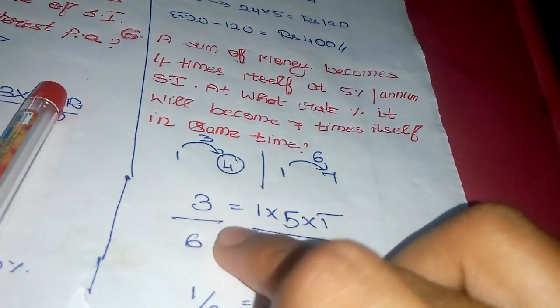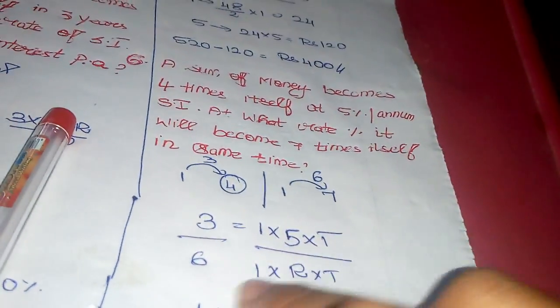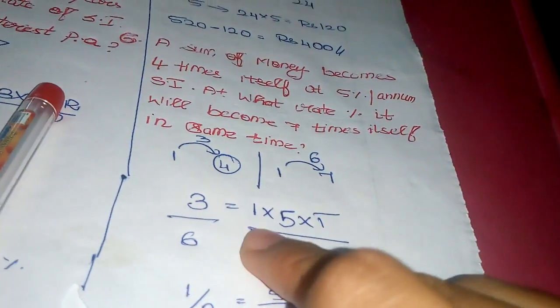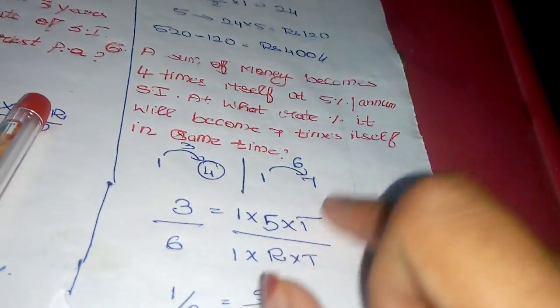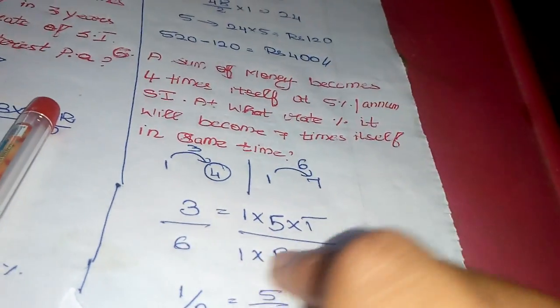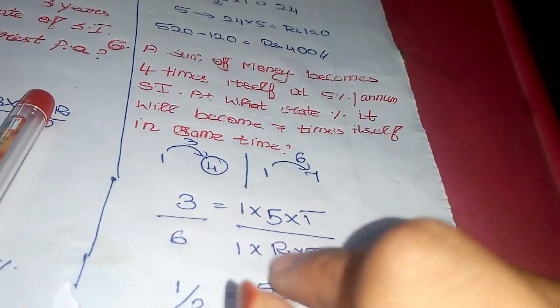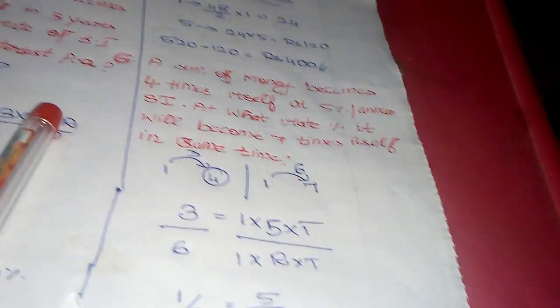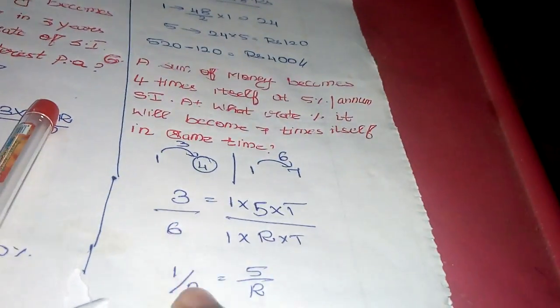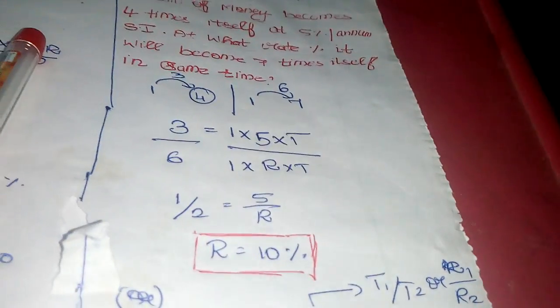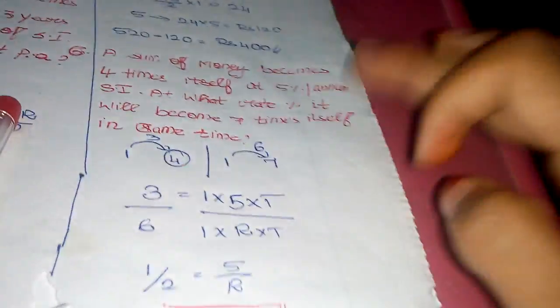3 by 6 equals P×R×T/100. Cancel principle: 1 into 5 percentage into time period unknown. So 1 into R into rate of interest - therefore R equals 10 percentage. This is the shortcut trick formula.